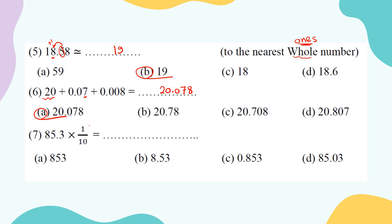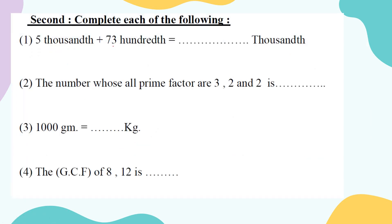Number: 85.3 times one over ten. One over ten is a fraction, but convert it to decimal: one-tenth equals 0.1. Now ignore decimal points and multiply: 853 times 1 equals 853. Count decimal places: one place in 85.3 and one place in 0.1, giving two decimal places total. Place the decimal point two from the right. The right answer is B.